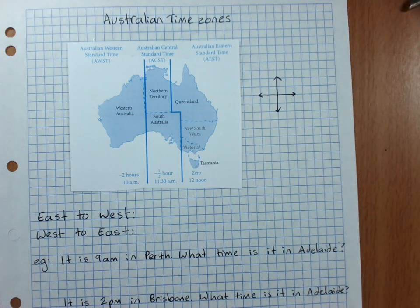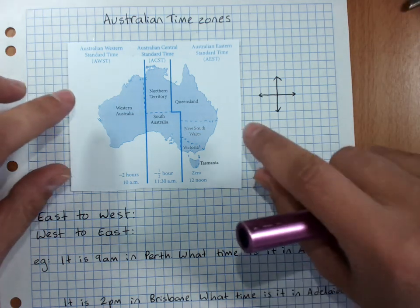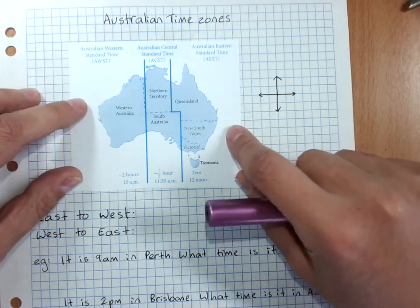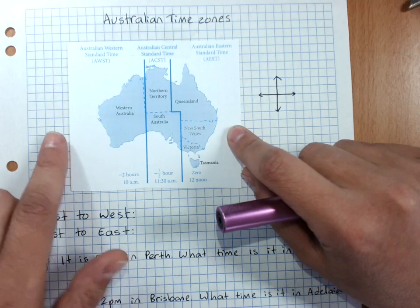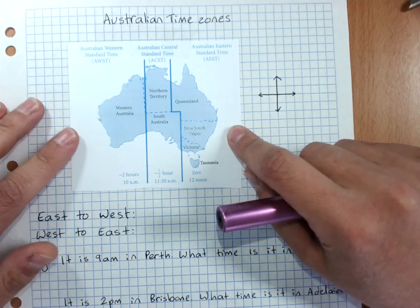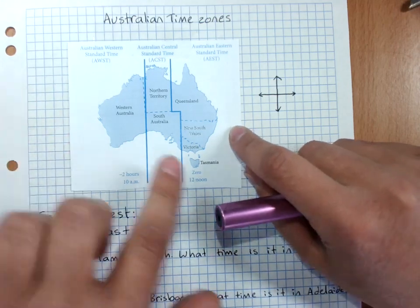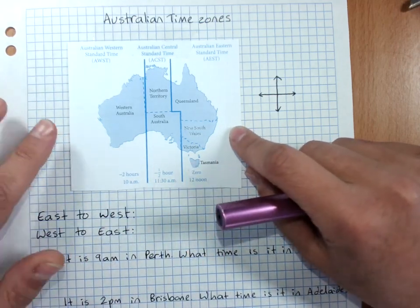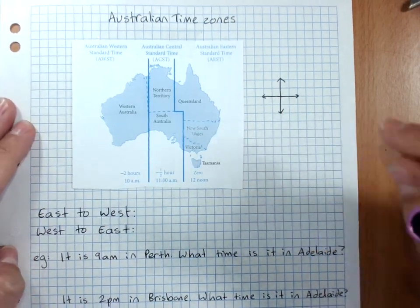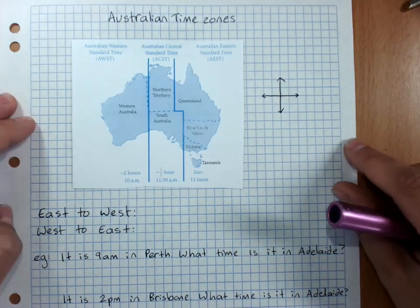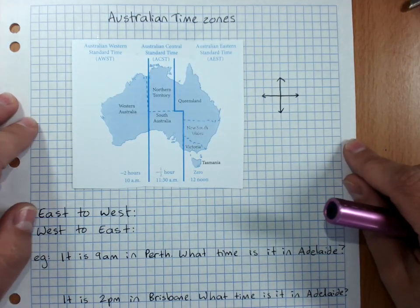Australian time zones. Because the Earth is round and the Sun rises at different times depending on where you are in the Earth, we have different time zones all the way around the Earth.